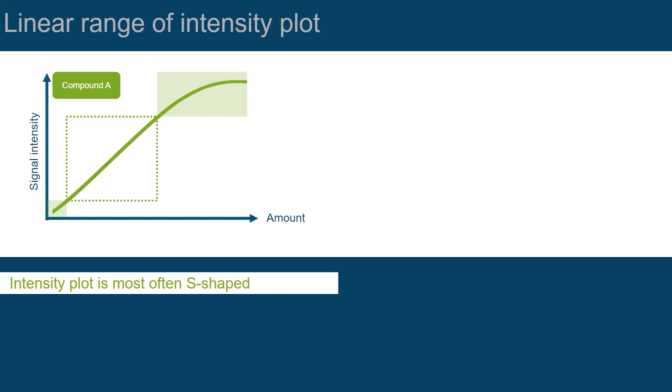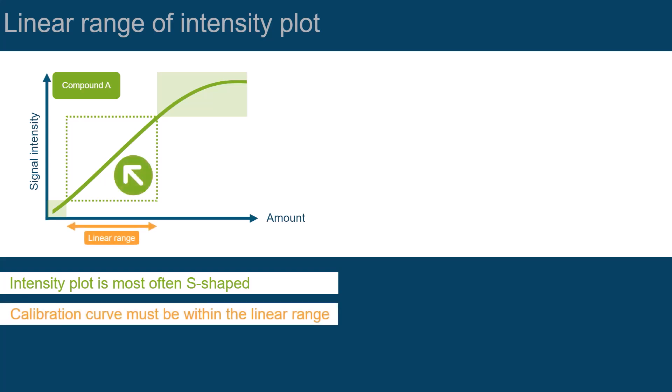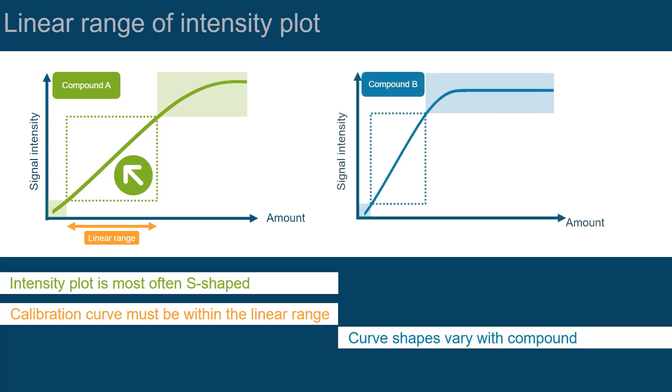Because we want to have a direct proportional change of the signal with the amount of the compound, it is mandatory that your calibration curve is within the linear range of the intensity plot. The curve shapes vary with the compound, and their linear range will therefore be different.